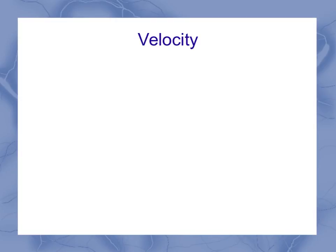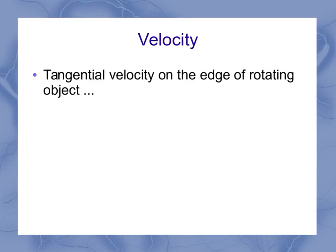That leads us to the velocity. Specifically here, I'm talking about the tangential velocity on the edge of a rotating object. So again, I've got the same circle with the same radius marked. Now, when I think about the speed, at this moment, it's moving upwards. Of course, it's going to move around in terms of the angular velocity.